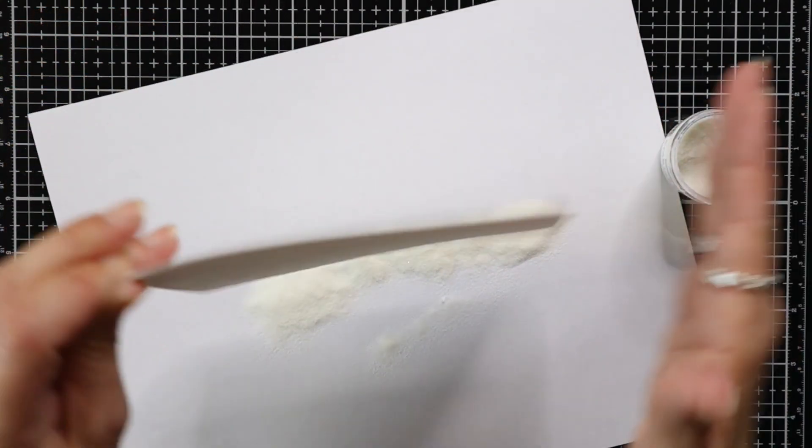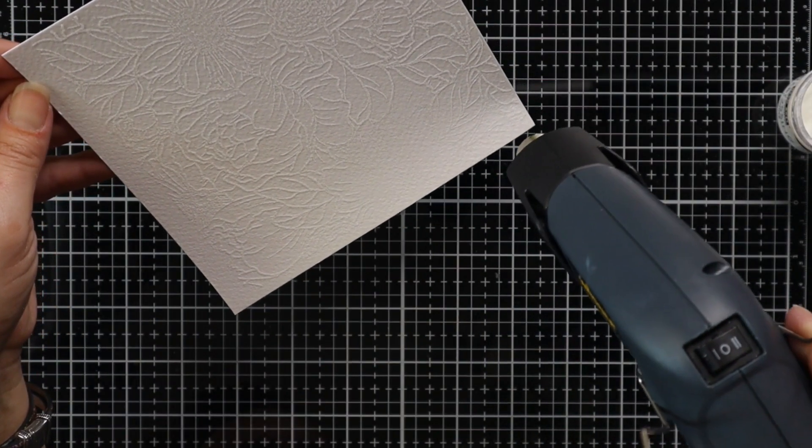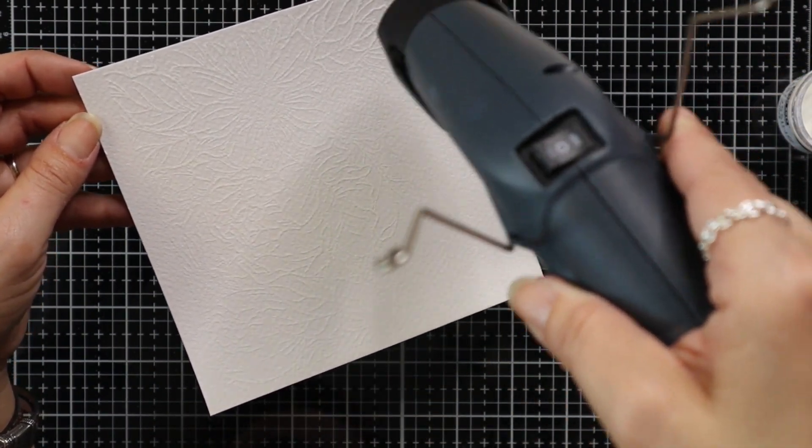Then I'm going to sprinkle on clear embossing powder and this is going to trap the color of the cardstock underneath. So it's going to appear white. Then I will melt that embossing powder with my heat tool.